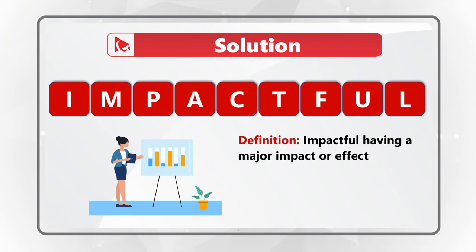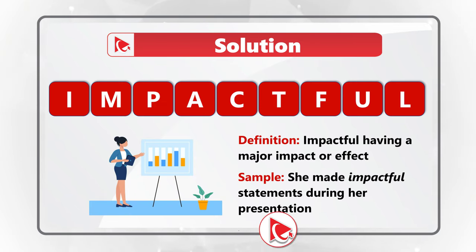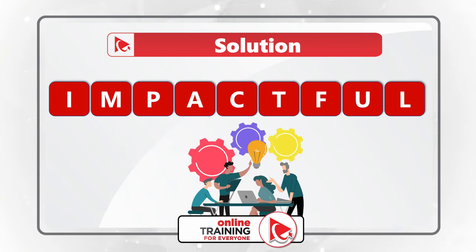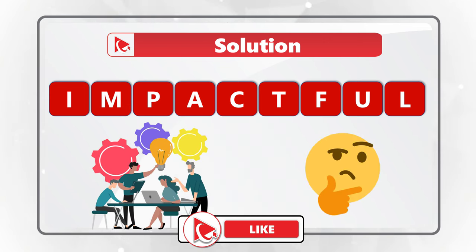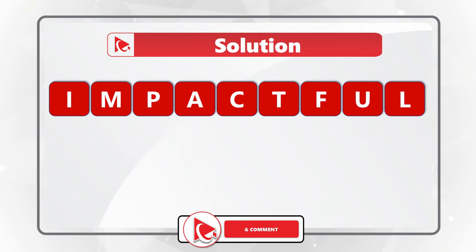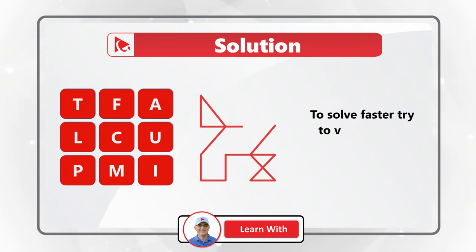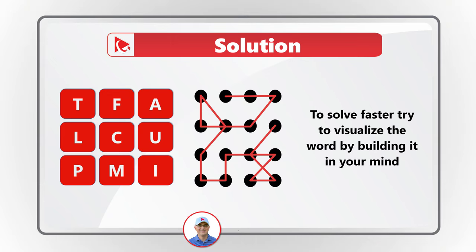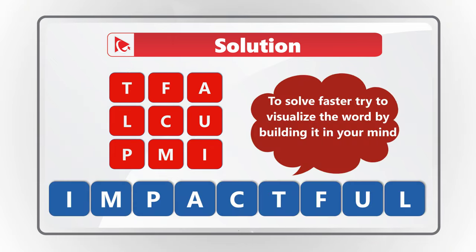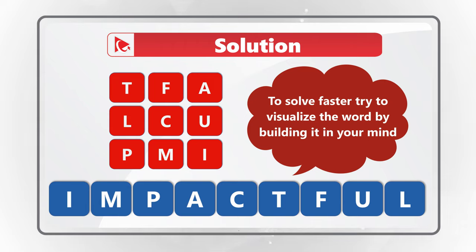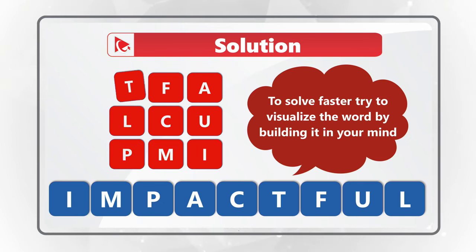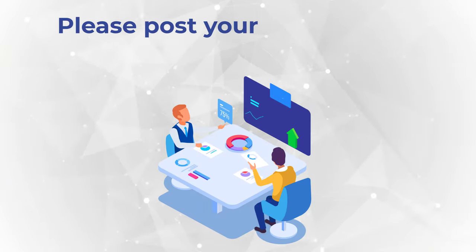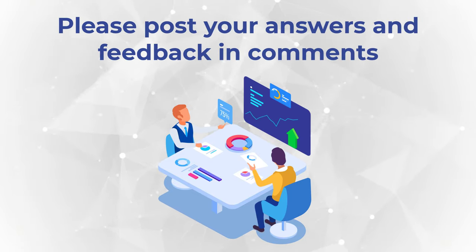The best way to solve these anagram challenges is to draw lines connecting the letters and see if you can form a word. In this case, letters that are next to each other in the real world are also adjacent in the puzzle. Connecting I-M-P-A-C-T-F-U-L leads you to the correct solution. If you have a better method, please share in comments so we can all learn.